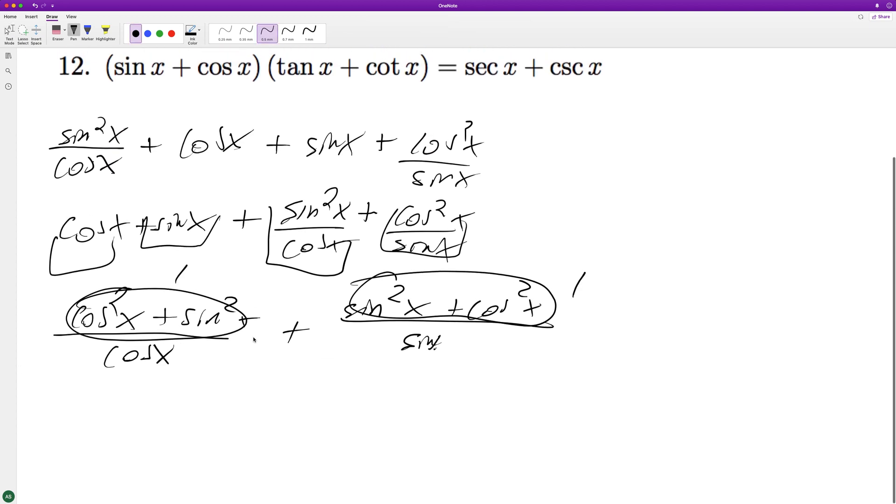So we end up with one over cosine x plus one over sine of x, and this gives us secant of x plus cosecant of x, which is what we had up here.